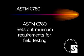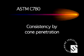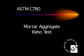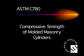C-780 sets out minimum requirements for testing mortars in the field. Field test results obtained under C-780 are not required to meet the minimum compressive values specified by C-270. C-780 is a compilation of test methods — it tells you how to run the test, not what those values should be to pass or fail. Some of the test methods included in C-780 are: consistency by cone penetration, consistency retention or board life, mortar aggregate ratio test, mortar water content, mortar air content, compressive strength of molded masonry mortar cylinders, compressive strength of molded masonry mortar cubes, and splitting tensile strength of molded masonry mortar cylinders.